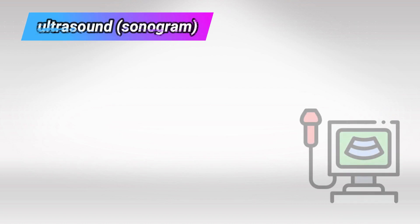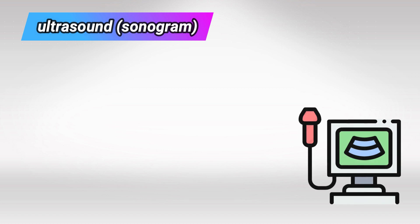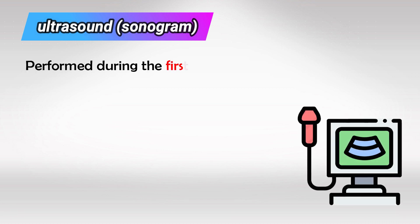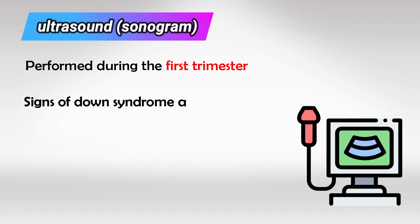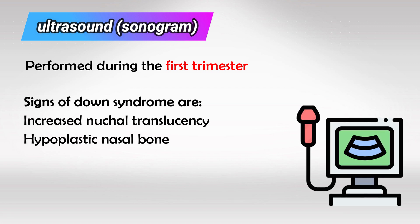The second test, which is also non-invasive, is ultrasound, also known as sonogram. This is typically done in the first trimester, and if the ultrasound shows increased nuchal translucency and hypoplastic nasal bones, both of these signs indicate a high chance of the fetus having Down syndrome.